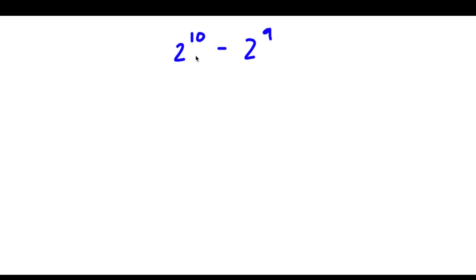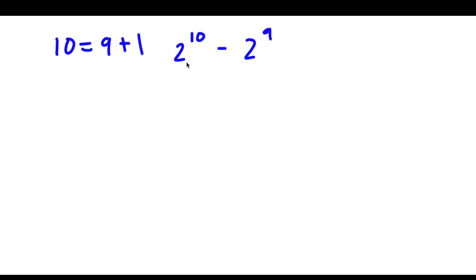Alright, so I have 2 to the power of 10 minus 2 to the power of 9. Now, 10 here is the same thing as 9 plus 1. So if I substitute in 9 plus 1 for 10, I have 2 to the power of 9 plus 1 minus 2 to the power of 9.